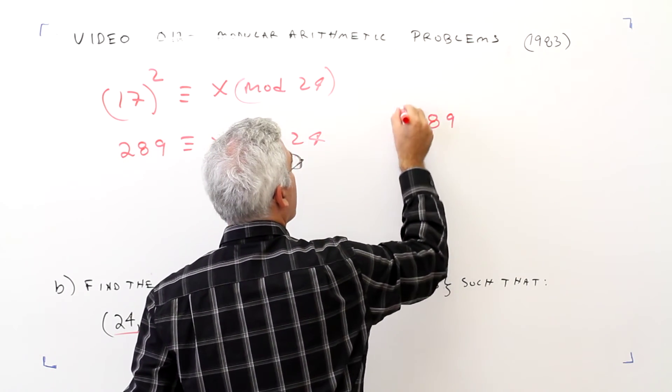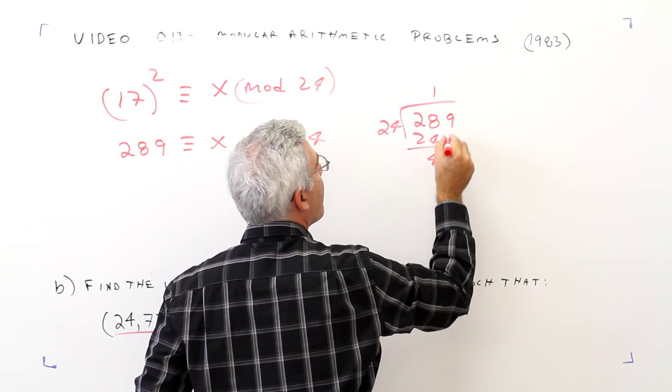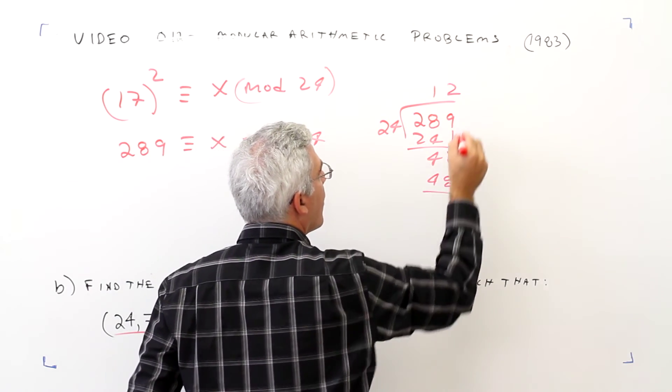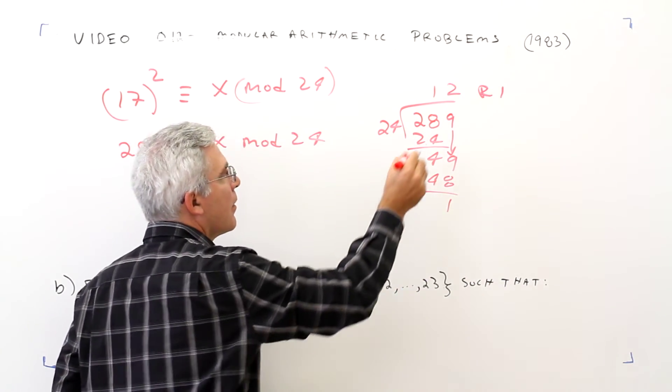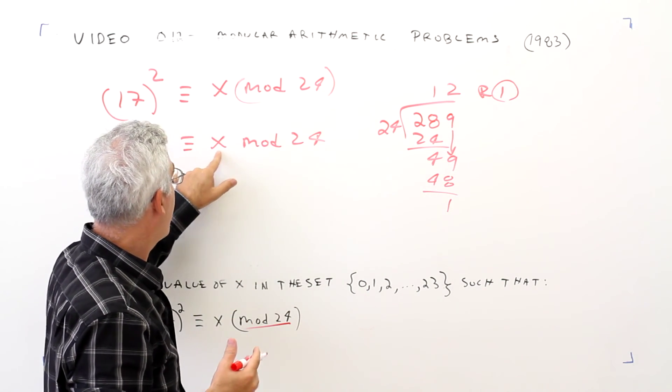289 divided by 24, 1, 24, 4, 9, 2, 48, 1, remainder 1. So again, that remainder is that right there.